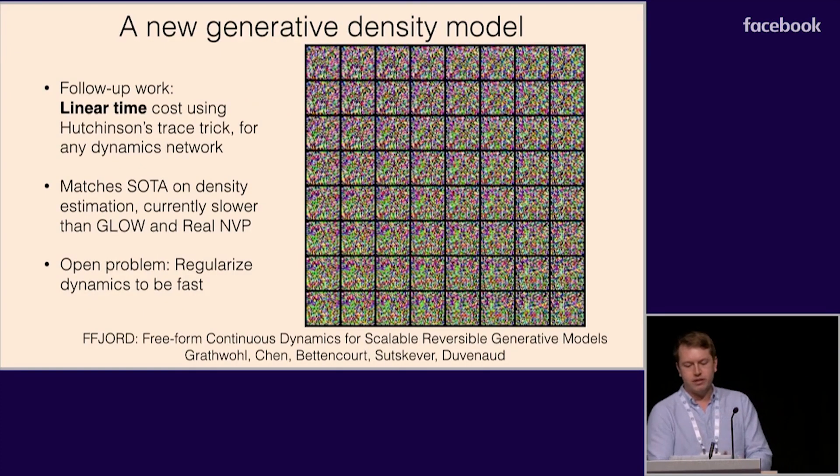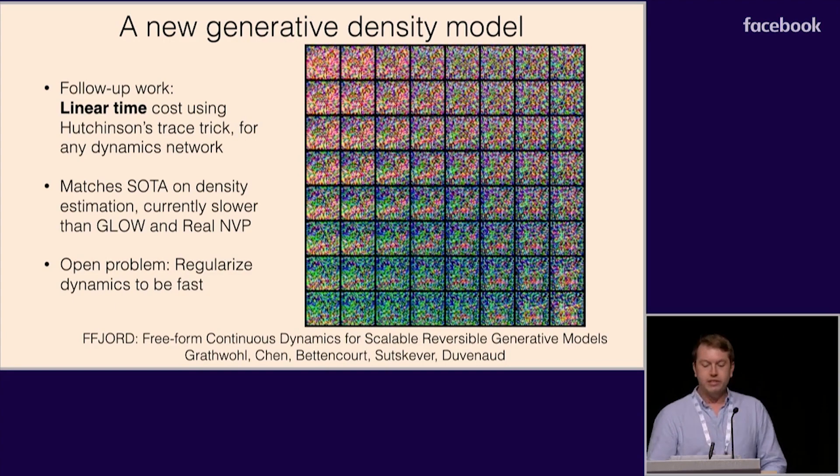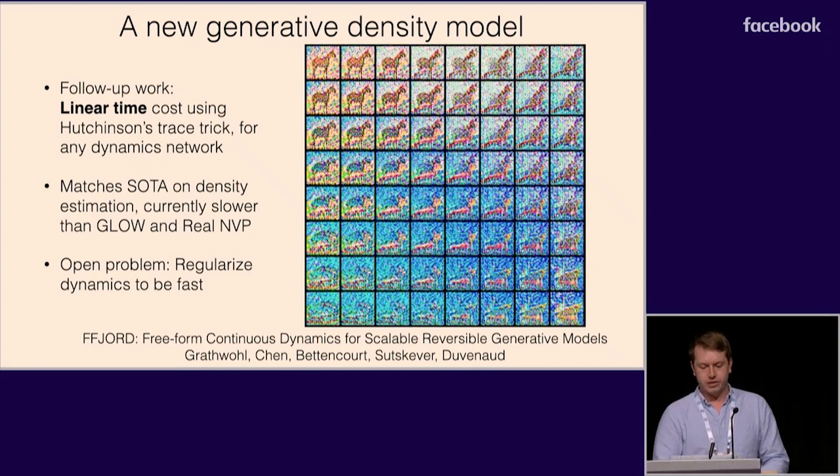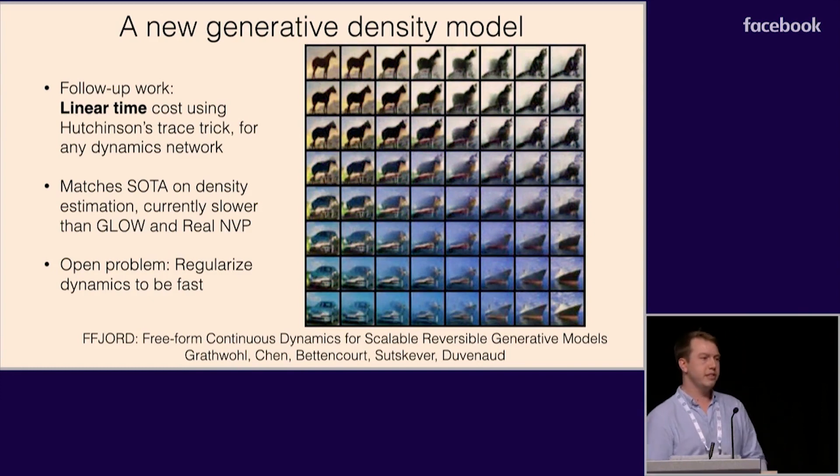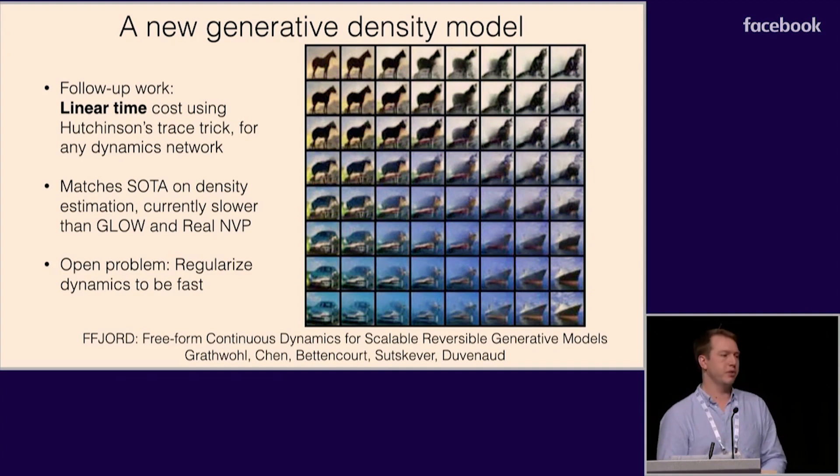In follow-up work, we brought the cost of estimating the density down to linear time for any dynamics network architecture. This let us scale up so far to medium-sized images. Here, you can see it continuously transforming Gaussian noise into images. It also matches the state-of-the-art for efficiently sampleable density models. Of course, it's still early days for this model class, and the computational cost is greater than that of Glow or Real NVP.